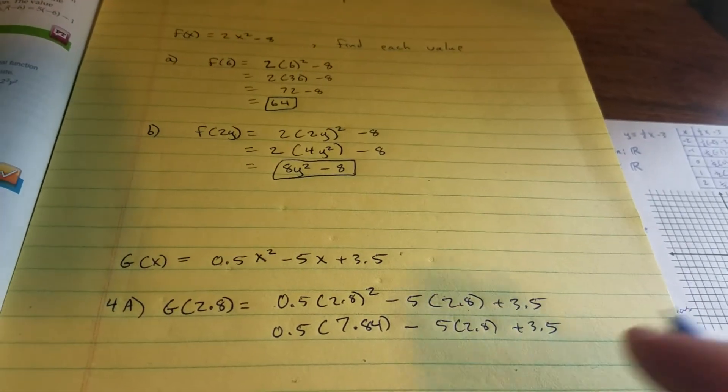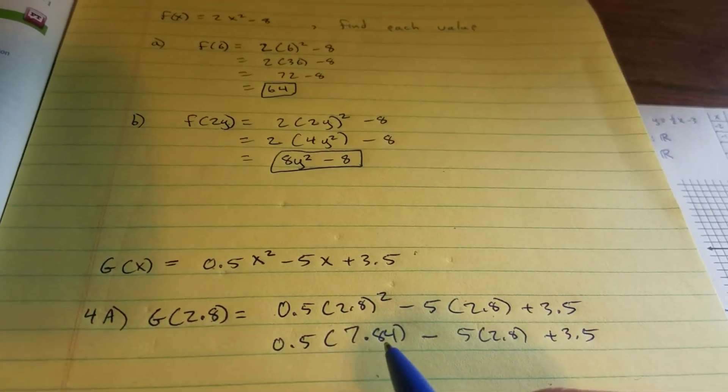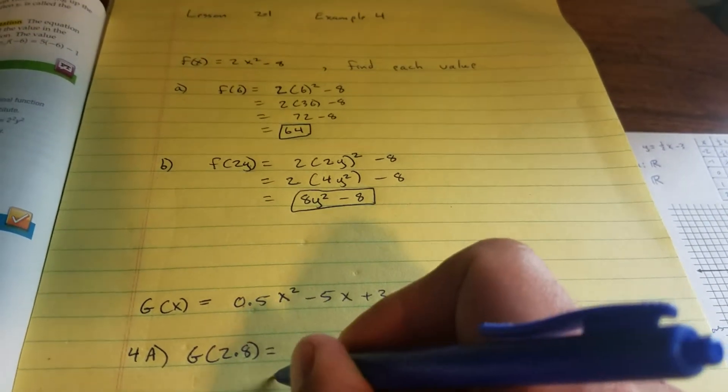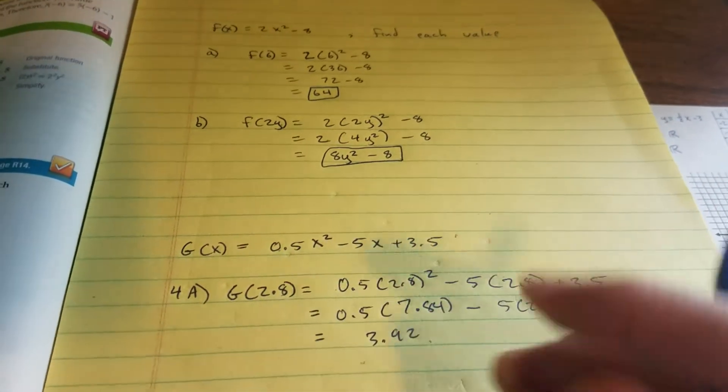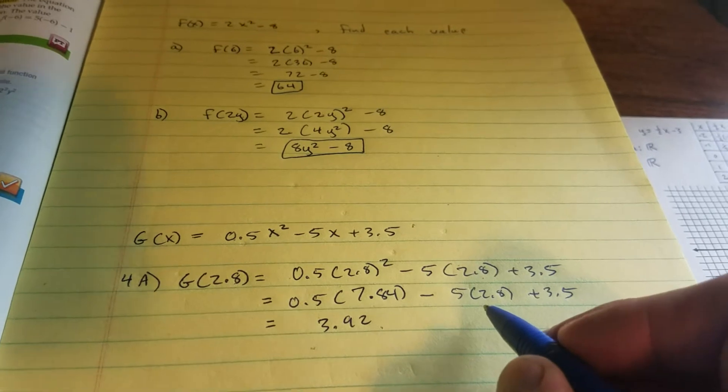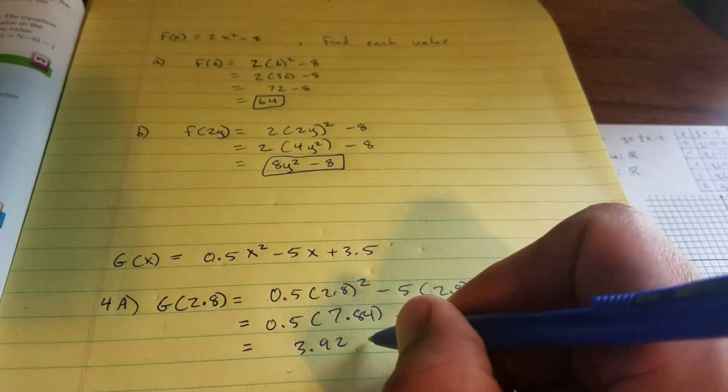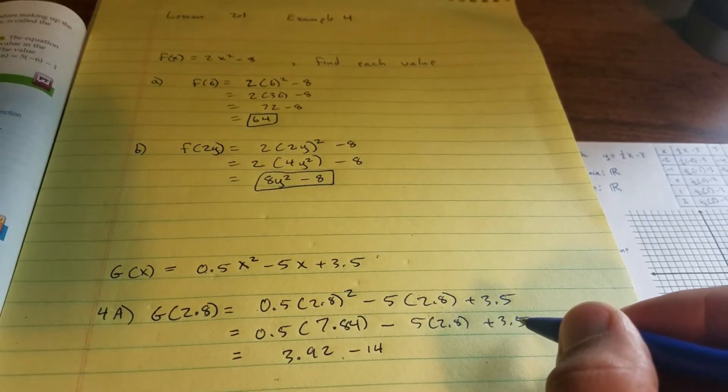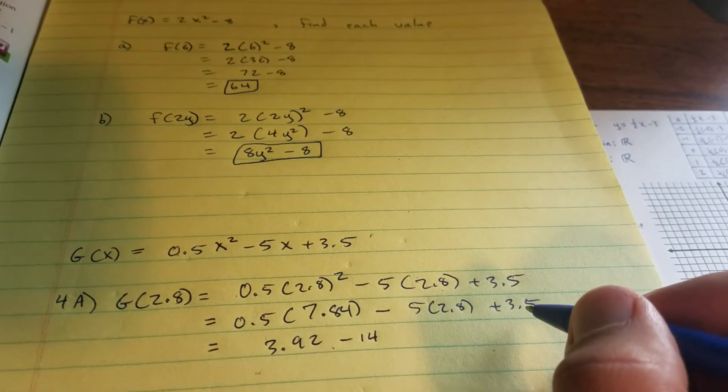After powers, we multiply. 1.5 of 7.84 is 3.92. I should be putting equals on the left-hand side as I go down. 5 times 2.8 is 14, so we got minus 14, and then plus 3.5.